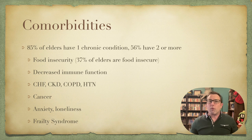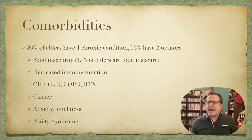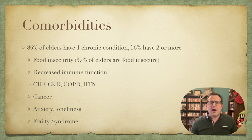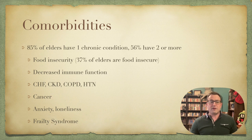85% of elders have one chronic condition, and 56% have two or more — almost every geriatric patient you will meet has an issue going on. Along with that, they have a high rate of food insecurity; more than a third of geriatric people have food insecurity issues. They have decreased immune function, which relates to their higher comorbidity risk, and higher rates of chronic diseases like CHF, CKD, and COPD. They have higher rates of cancer, higher risk of anxiety and loneliness than the average adult, and they are at risk of developing a specific age-related disease called frailty syndrome, which we'll discuss later on.